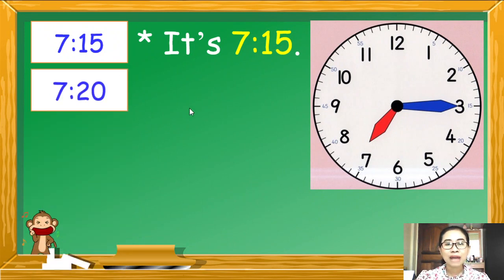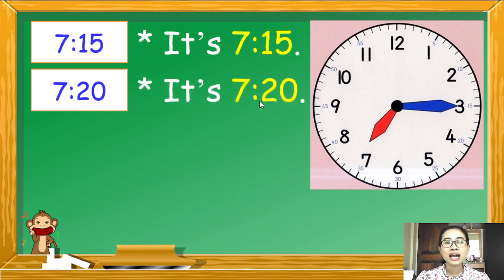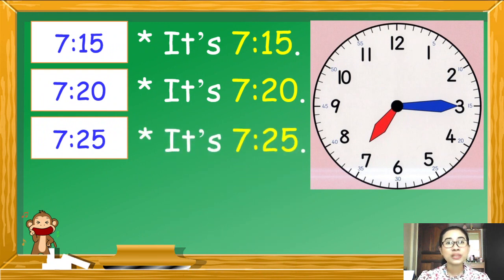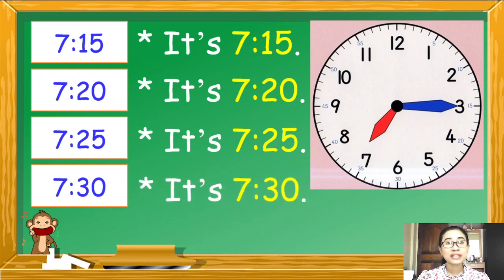ถ้าเข็มยาวชี้เลข 4 เราเปลี่ยนเป็น 20 นาที ก็เป็น 7.20 ต่อไปถ้าเข็มยาวชี้เลข 5 เป็นเวลากี่นาทีคะ เก่งมากค่ะ very good เป็นเวลา 25 นาที ดังนั้นเขียนได้ว่า 7.25 และถ้าเข็มยาวชี้เลข 6 คือ 30 นาที เขียนได้ดังนี้ 7.30.